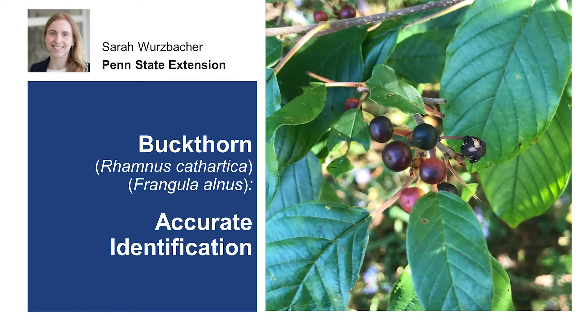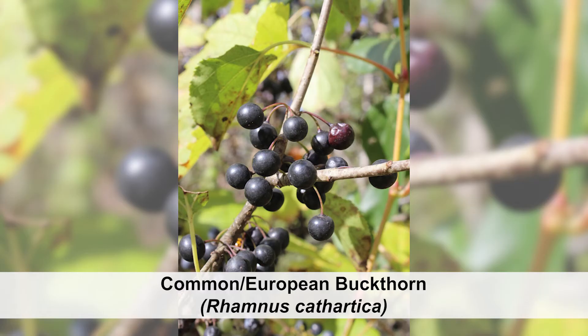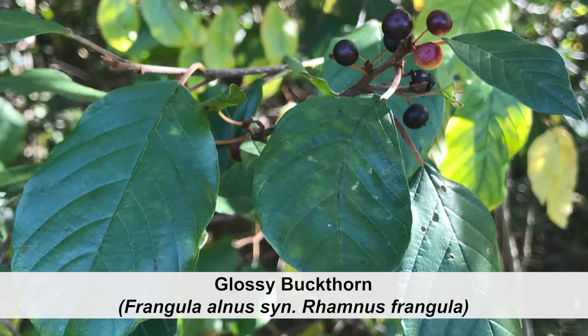Buckthorns are thicket-forming invasive small trees that crowd out native species in forests and natural areas. There are two buckthorn species we'll consider as a group because they behave similarly in the landscape and require similar control procedures: European or common buckthorn, introduced from Europe, and glossy buckthorn, introduced from East Asia. Both species' showy fruit display and hardy foliage made them popular ornamentals, but they are now highly competitive invaders of eastern woods and wetlands.